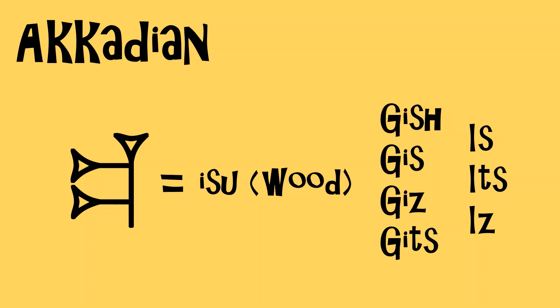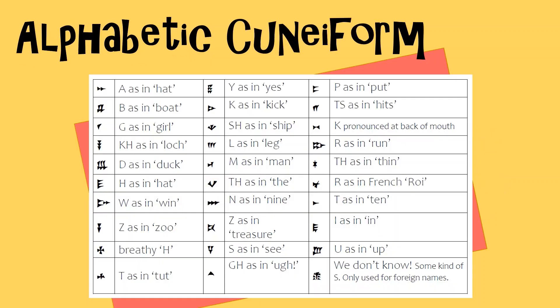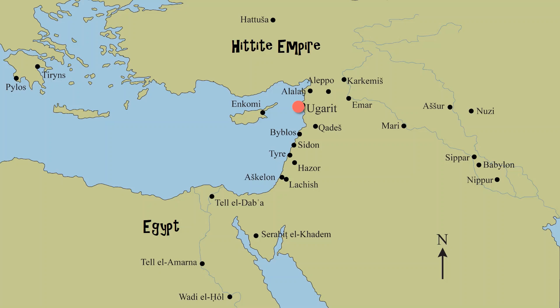But what if there was an easier kind of cuneiform, one that worked in the same way as our own alphabet and only had about 30 signs? In fact, there is. It's called alphabetic cuneiform and it was invented in the Syrian city of Ugarit. Ugarit was an important trading city on the Mediterranean coast, with close contacts with Egypt and Cyprus, and it was part of the Hittite empire, whose capital was at Hatusha in what's now Turkey.